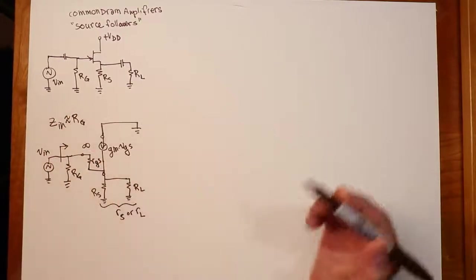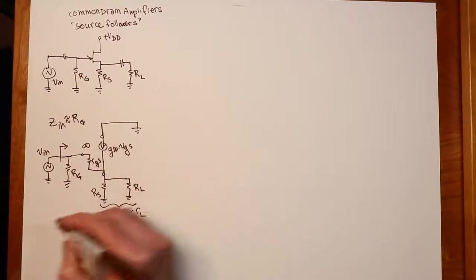If you're sitting back here looking in, what do you see for a ZIN? Well, you see RG and that's in parallel with ZIN to the gate which is your RGS. There's actually other things here but it doesn't even matter because RGS is virtually infinity. So you have this huge value in parallel with RG, so ZIN can just be approximated as whatever RG is.